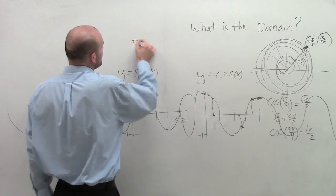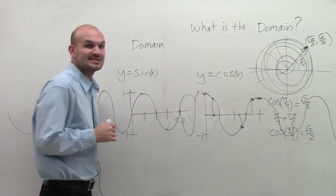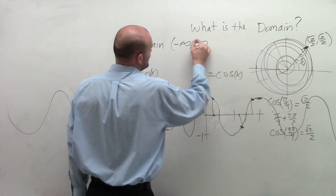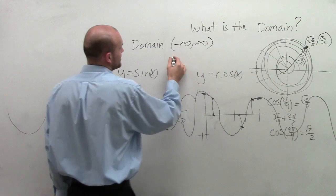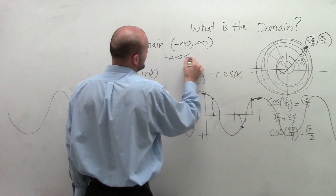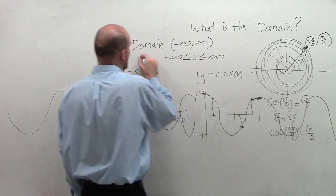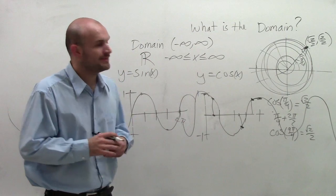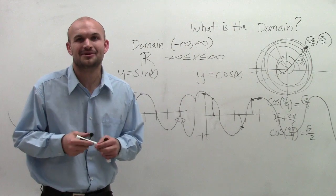So therefore, we can write the domain of our sine and cosine graph is going to be from negative infinity to infinity. Or you could say negative infinity less than or equal to x, which is less than or equal to infinity. Or you can also just write all real numbers. So there you go, ladies and gentlemen. That is the domain of sine and cosine. Thanks.